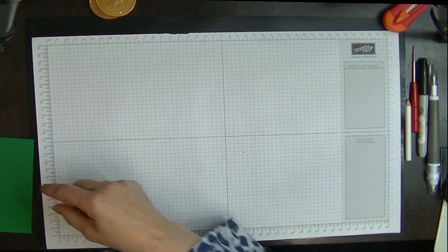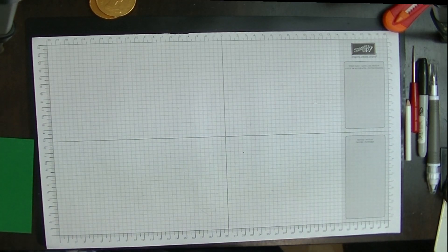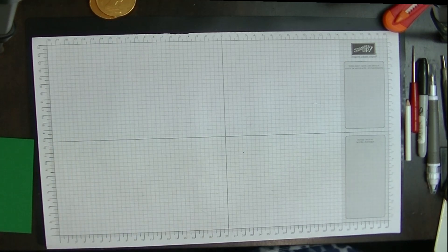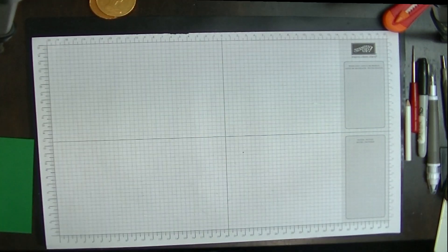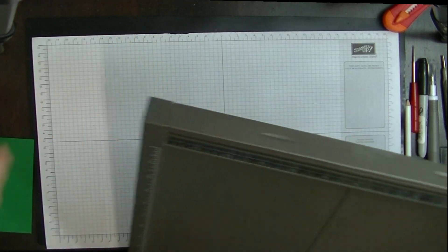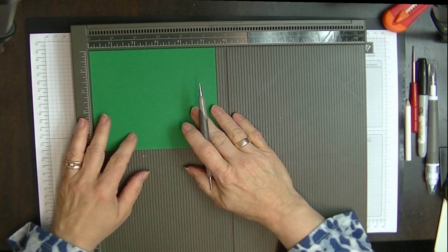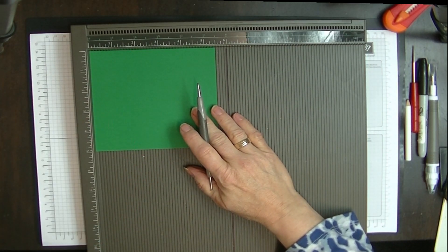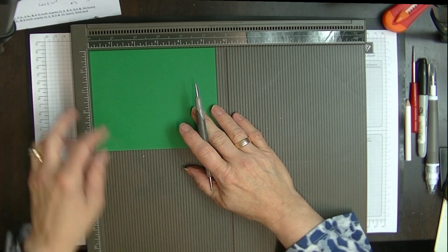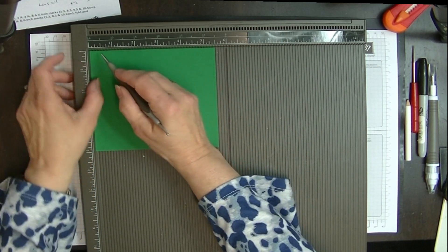So let's bring in my scoreboard. The scoring tool has fallen out again. Let's bring in my scoreboard. Let's move them out of the way. Now let's bring this in. And we're going to score this on the long side, which is the five and a half inch side.